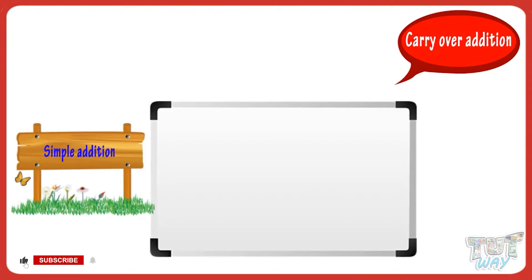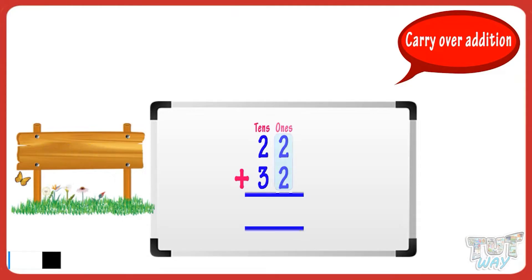A few questions on simple addition. First, add the ones place digits: 2 plus 2 equals 4. Write the sum below the ones place digits. Now add the tens place digits and write the sum right there below the tens place digits.